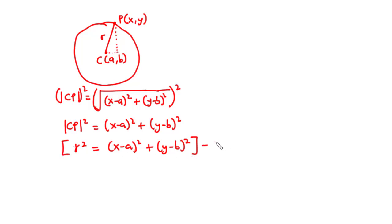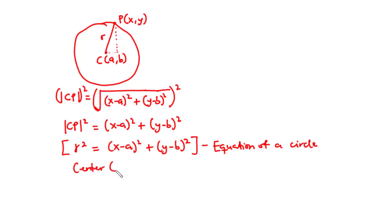This is called the equation of a circle. The center of the circle is (A, B) — that is the coordinate of the center — and the radius is R. Let's call this equation 1.